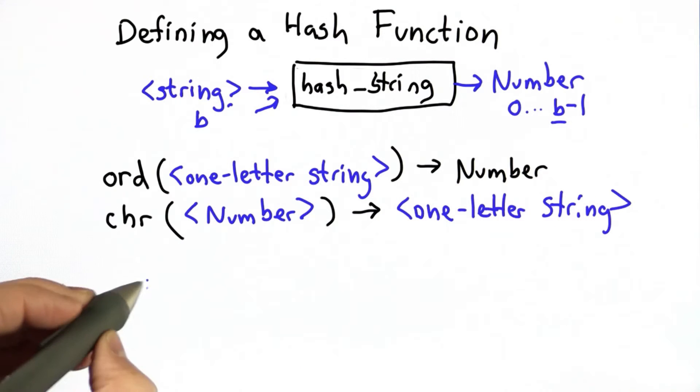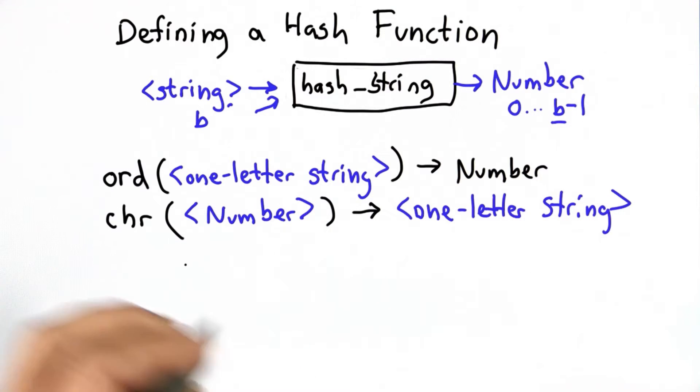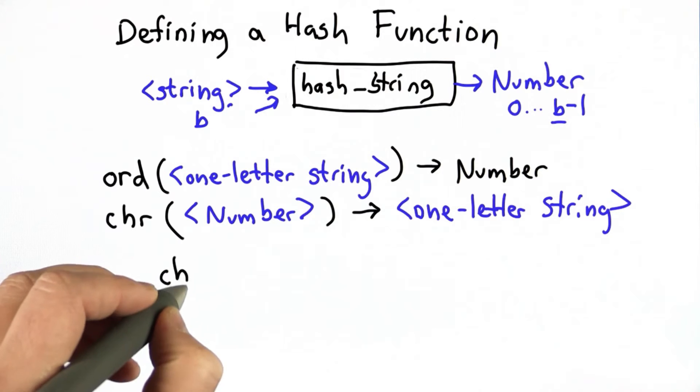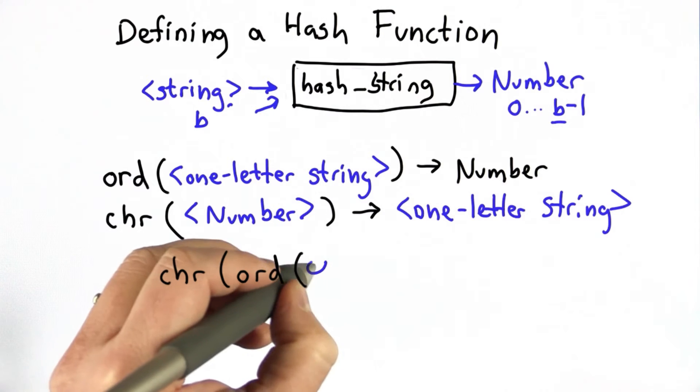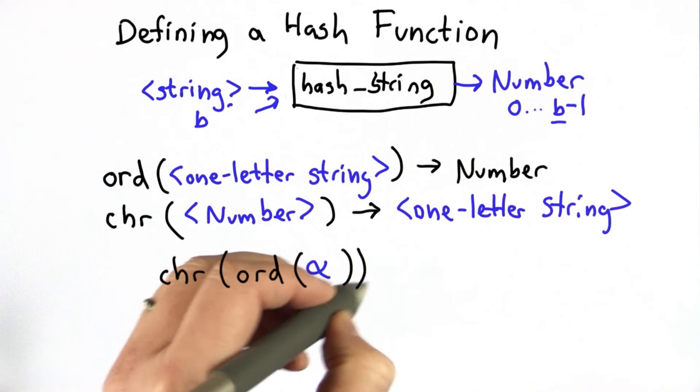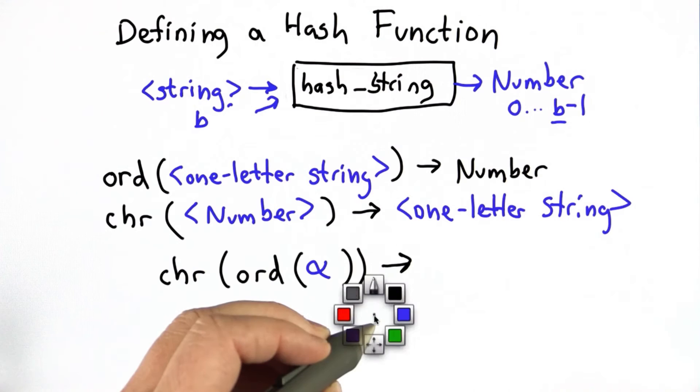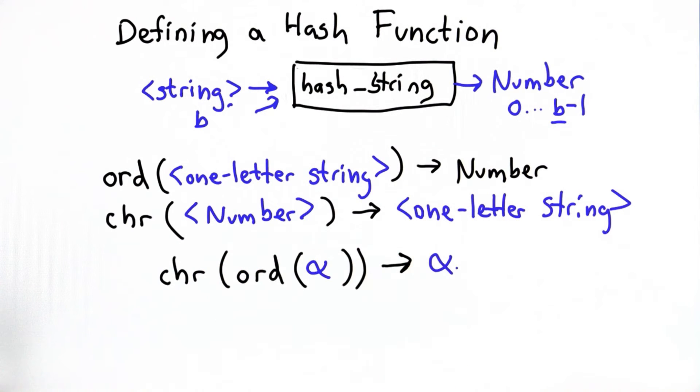And the property these functions have is they're inverses, that if we take the character corresponding to the ordinal, corresponding to any one-letter string, we'll call that alpha, what we get as a result is the same alpha that we passed in.